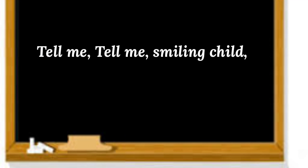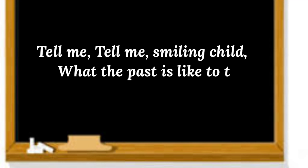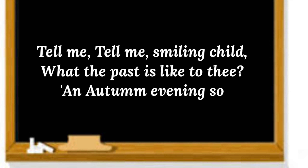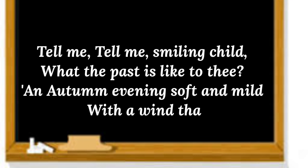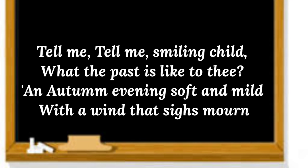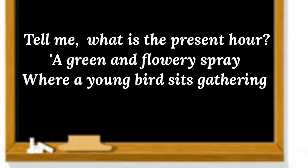Hello students, today we are going to learn the poem 'Past, Present and Future,' written by Emily Bronte. Let's have a look at the poem first. 'Tell me, tell me, smiling child, what the past is like to thee?'